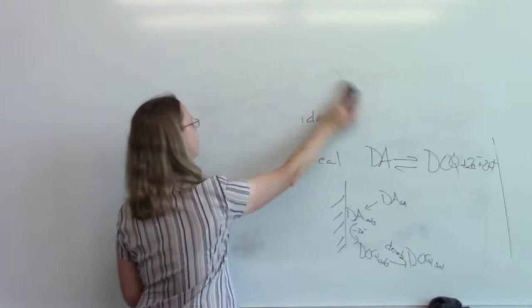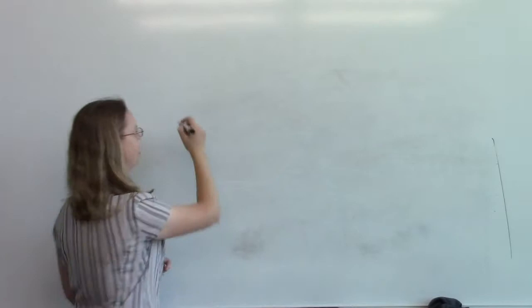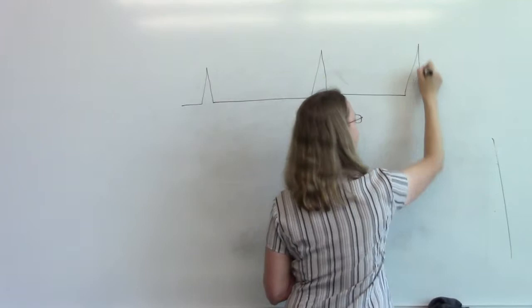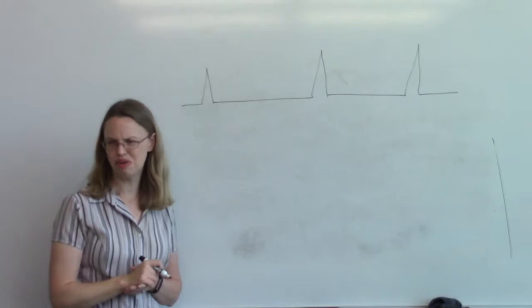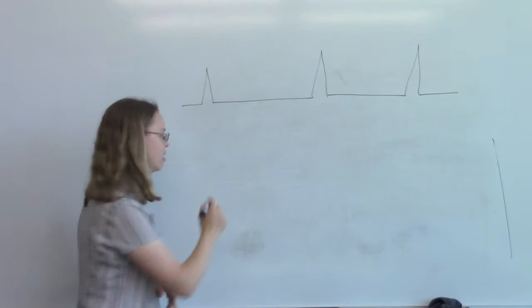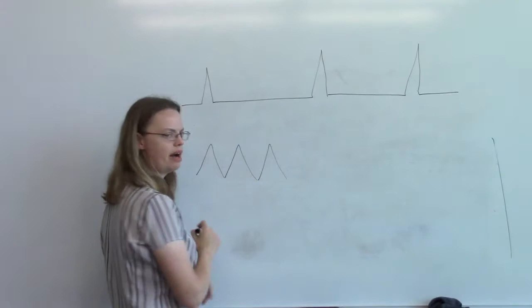Okay, so the other thing that I realized I have not drawn up until this point, but we're to the point where we can understand it. So I've skipped it to this point, but we can now understand this, is that there's a little bit of a funky thing we do for FSCV. And that is, we don't repeat them all the time. So if you were doing normal cyclic voltammetry with slower scan rates, and you wanted to do multiple scans, you'd do them like this.